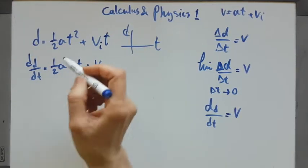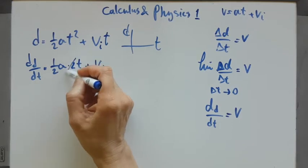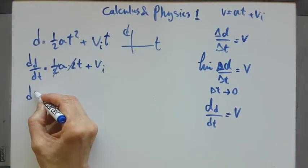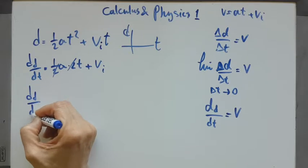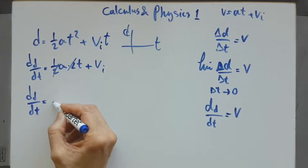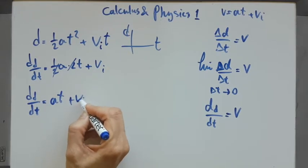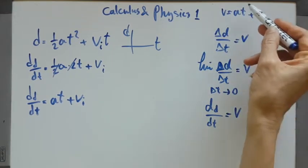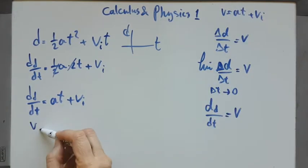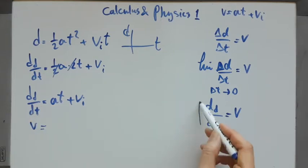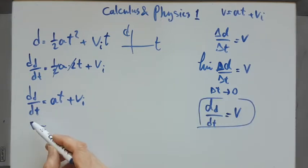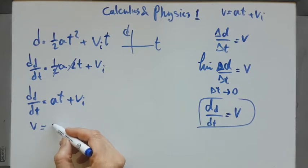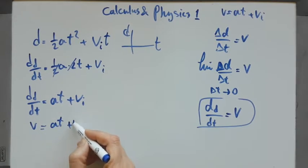So these two cancel each other, and the result is AT plus VI. That is V! The derivative of displacement is velocity, and it is actually the formula. So there was a reason you had that formula.